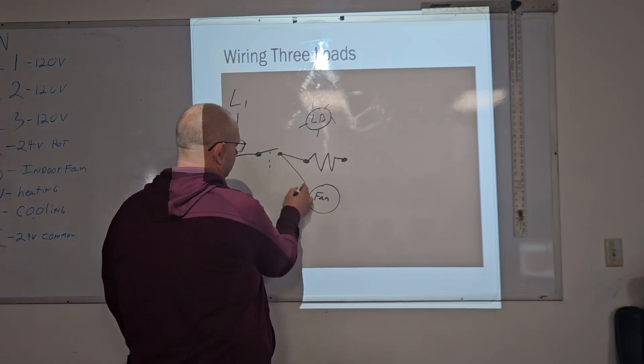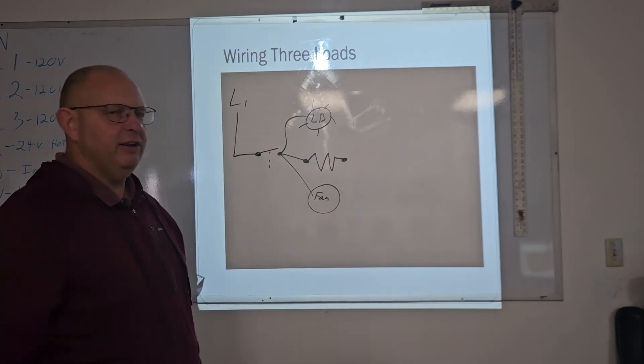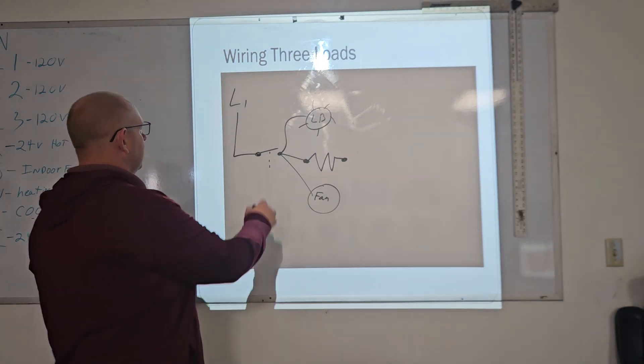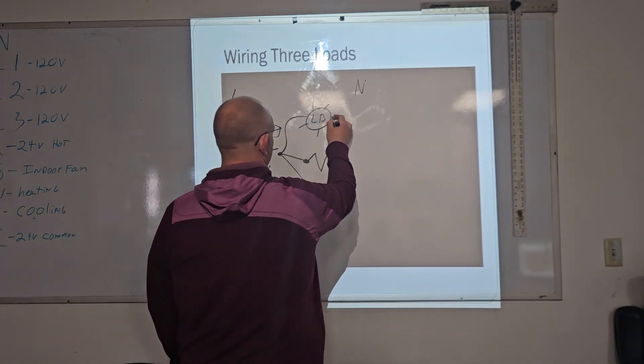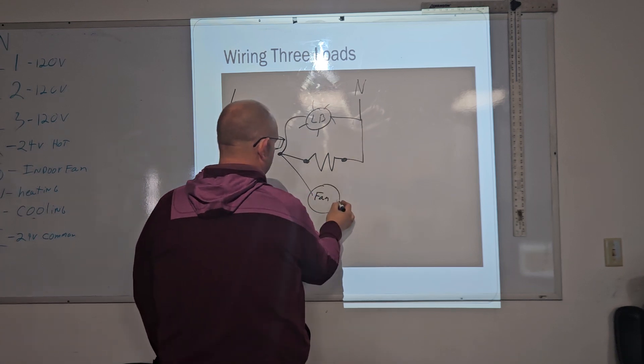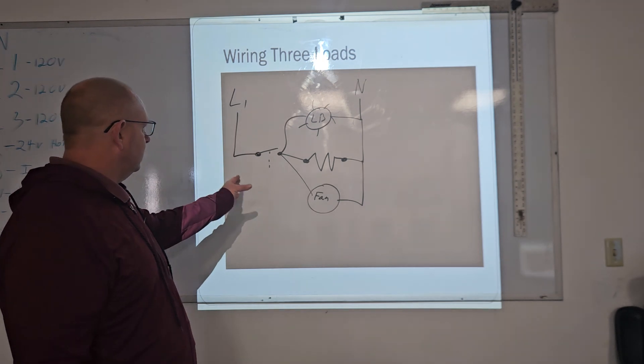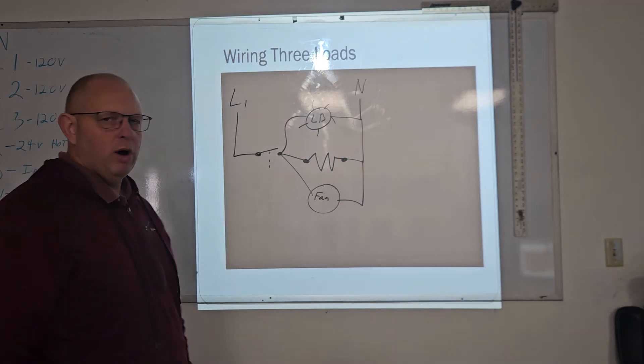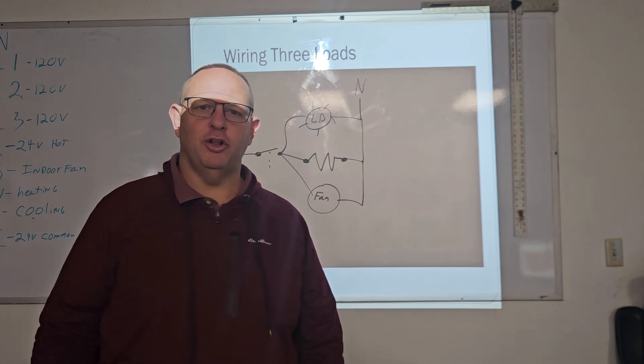Remember we need to complete the circuit, so we will complete the circuit back to our neutral in some way, shape, or form from the light bulb to neutral, from the heater to neutral, and from the fan to neutral. Once we have run all the conductors and all of these different wires to these different loads, then once we turn on the switch, the actual loads will heat up, the light bulb will turn on, and then the fan will turn on.